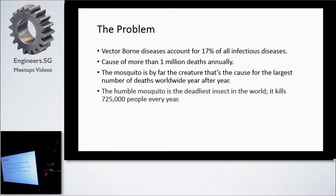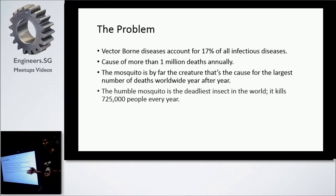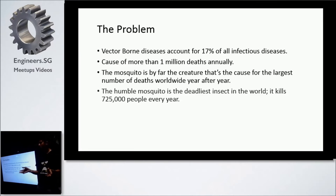So what's the problem? The problem is vector-borne diseases — diseases caused by flying agents, especially mosquitoes. They account for 17 percent of all infectious diseases and cause more than one million deaths. If you just Google 'world's most dangerous insect,' you will get the mosquito. It kills roughly 725,000 people every year — that's more than the death toll created by terrorism.